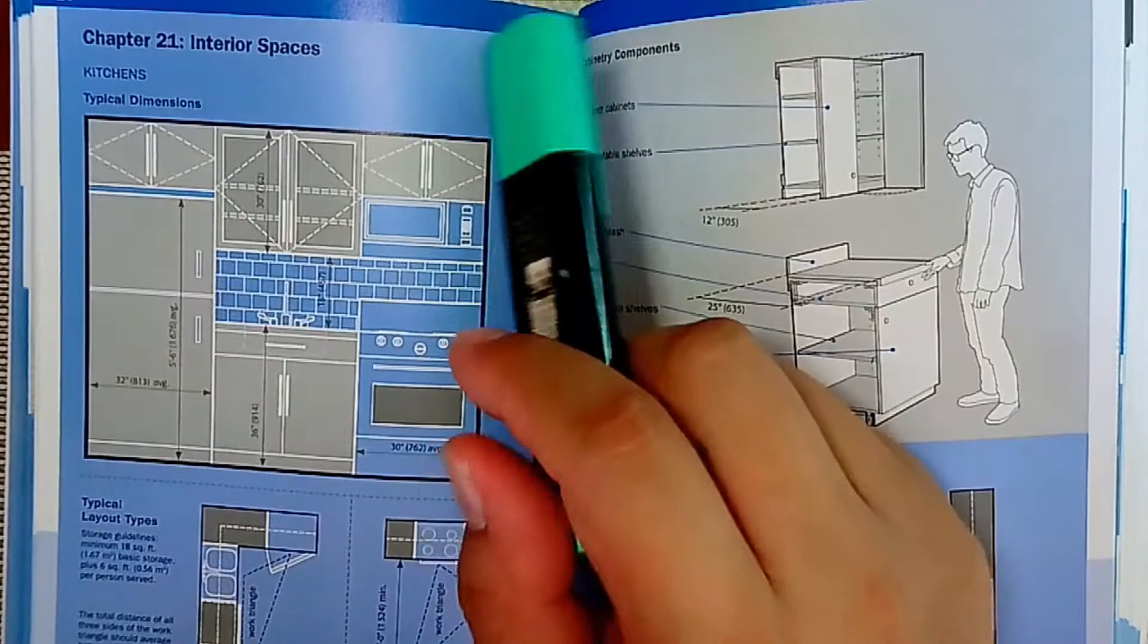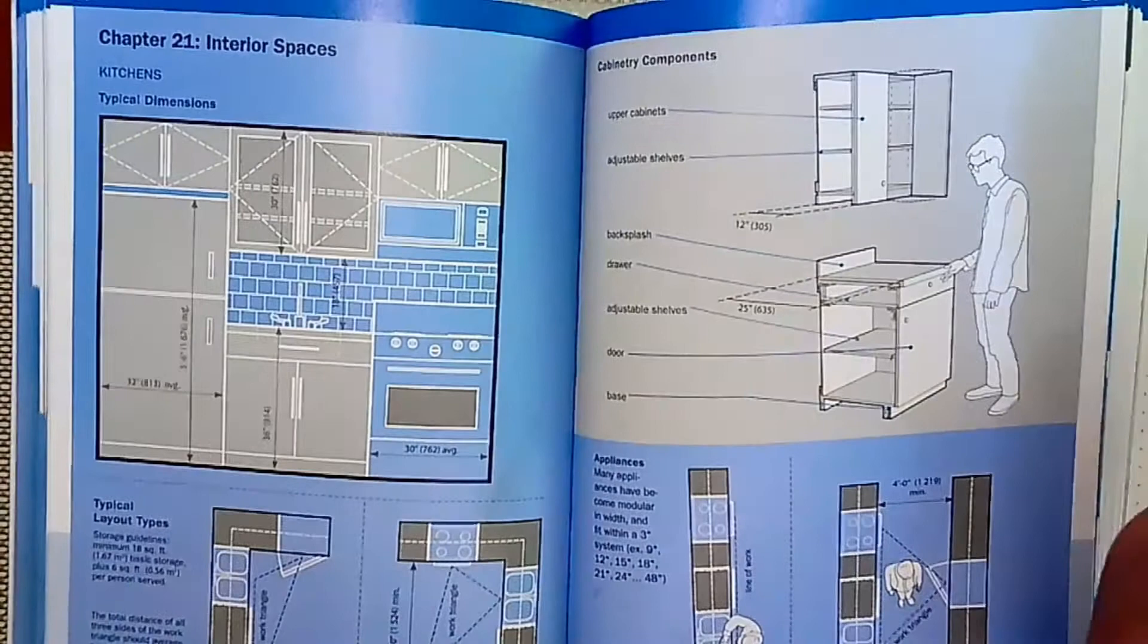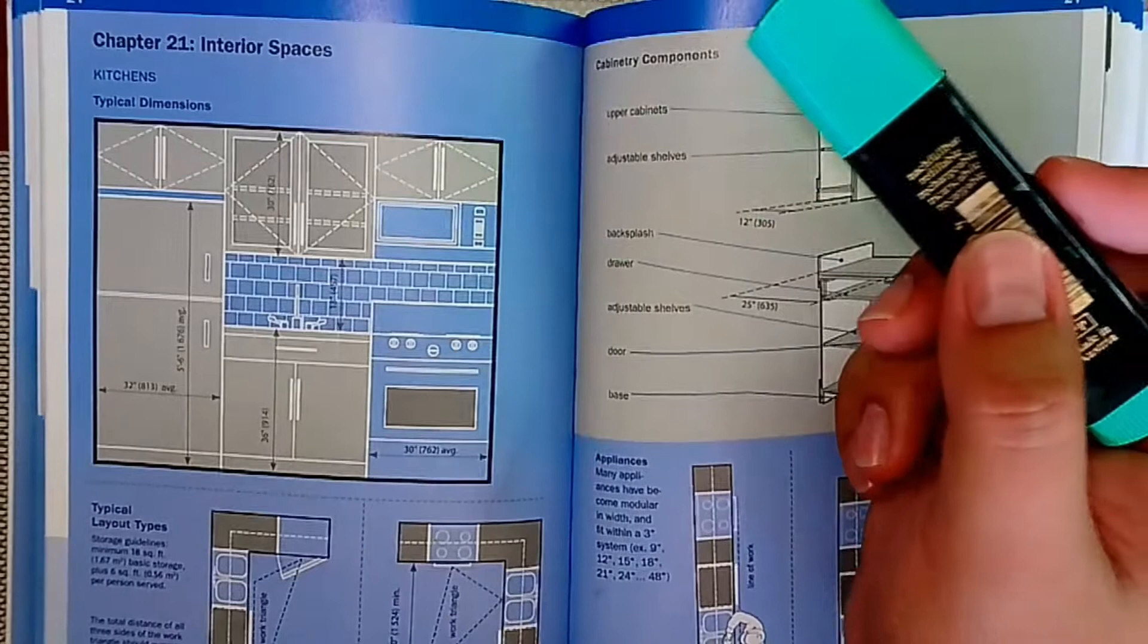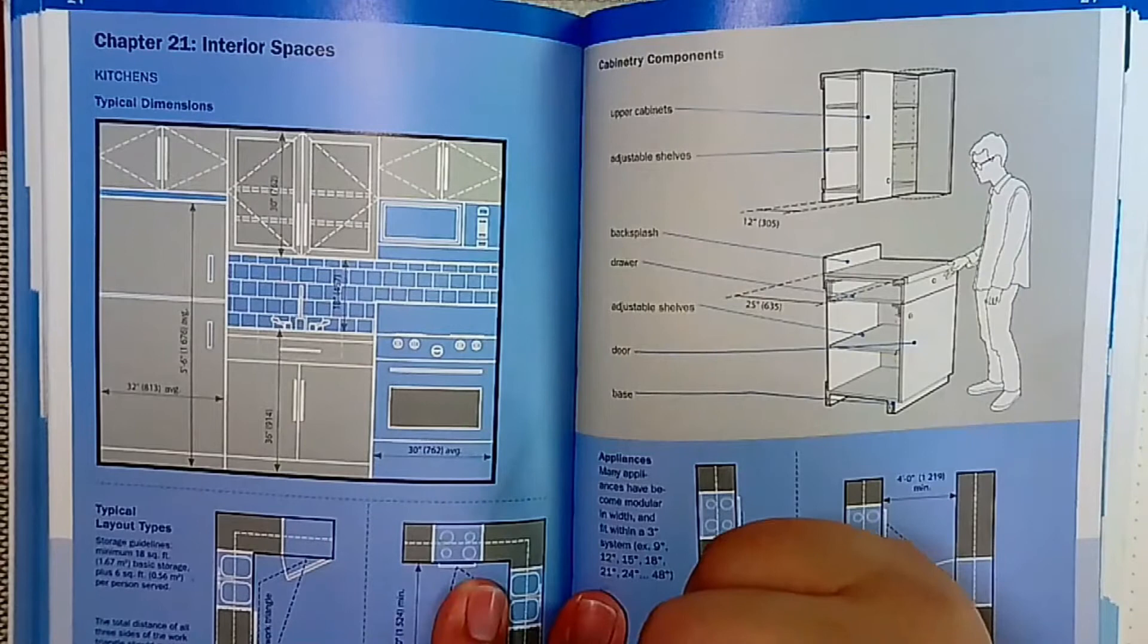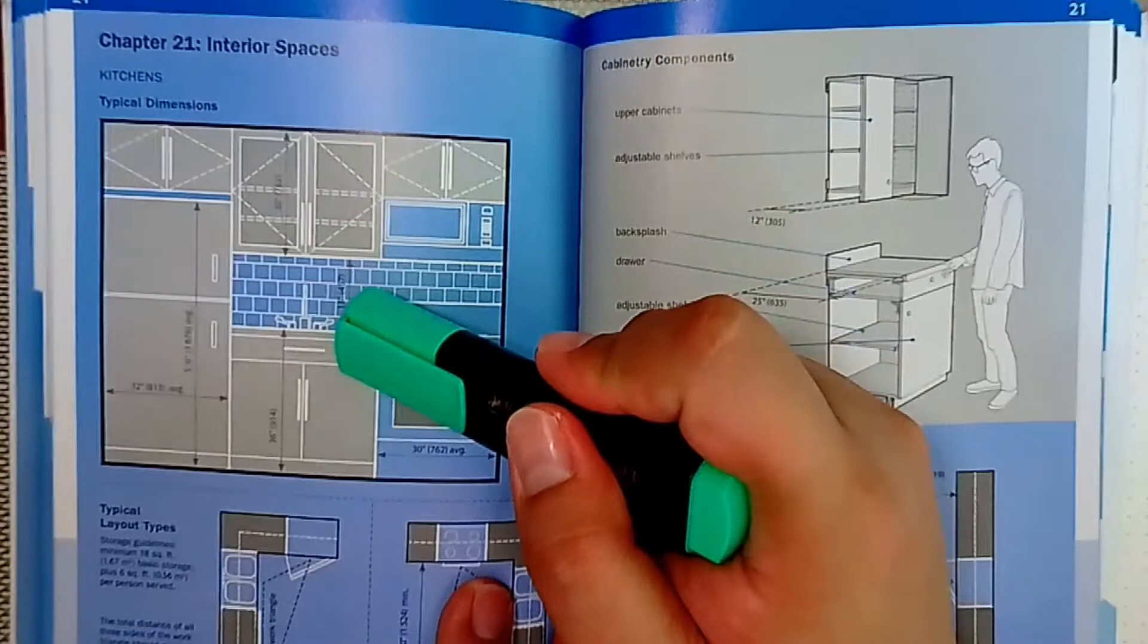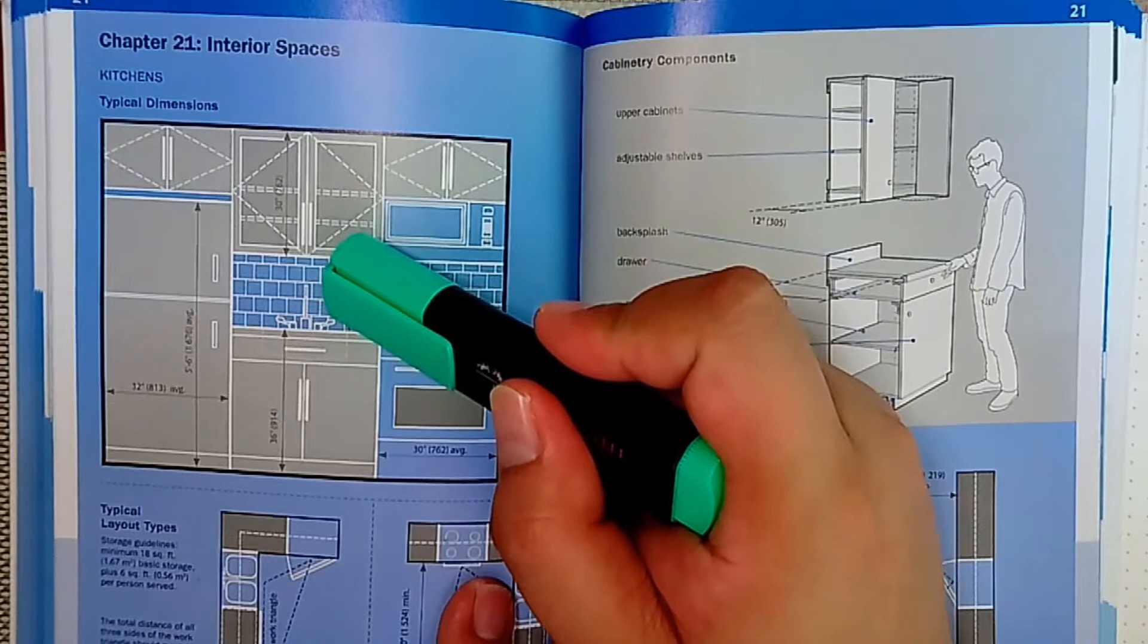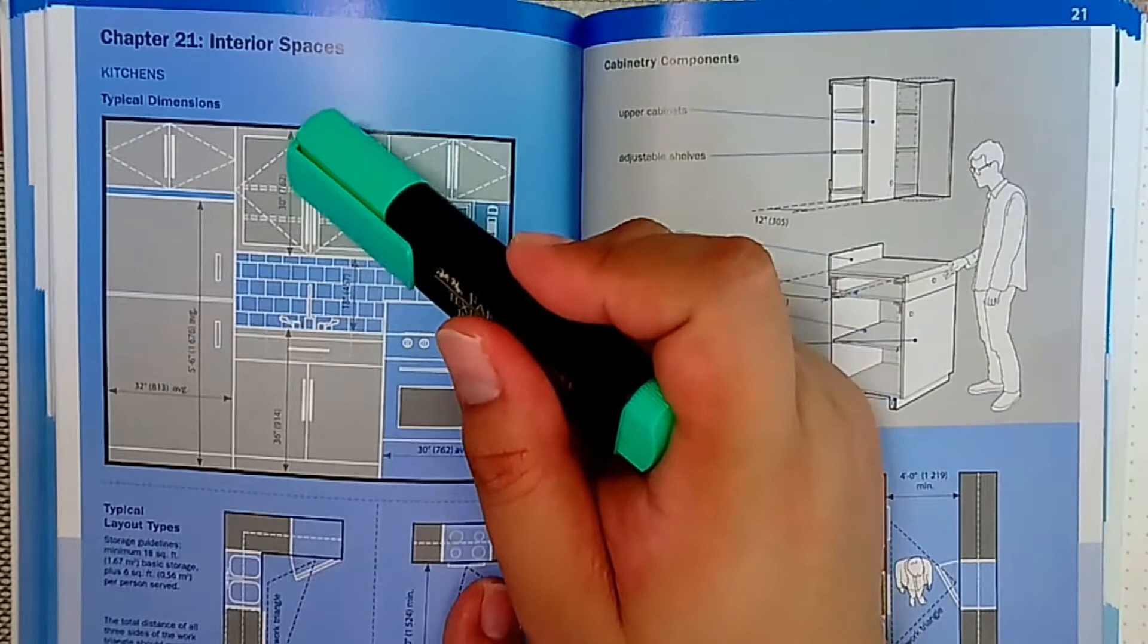This example shows an elevation of a kitchen. In the elevation you can see the dimensions and interrelationships of the different components. For example, the height of the countertop is around 914 millimeters, the distance from the countertop to the bottom of the cabinets is around 457 millimeters, and the cabinet height to the ceiling is around 760 millimeters.